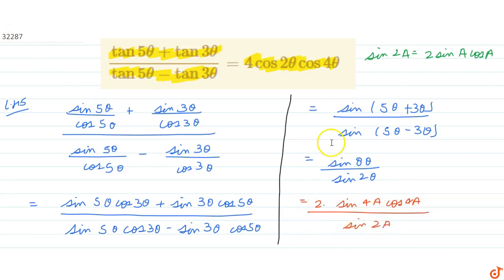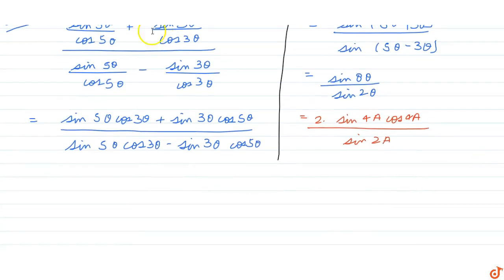Now again use this formula for sin 4a. What we get is 2 times 2 sin 2a cos 2a into cos 4a, whole divided by sin 2a.